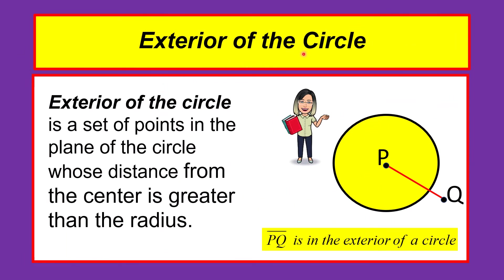The exterior of the circle is the set of points in the plane of the circle whose distance from the center is greater than the radius. We have segment P-Q, where point P is the center and point Q is outside the circle. Therefore, segment P-Q is in the exterior of the given circle.